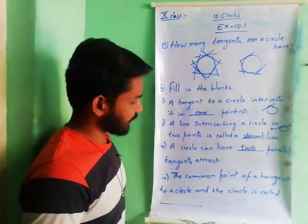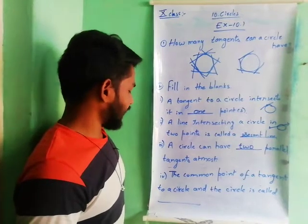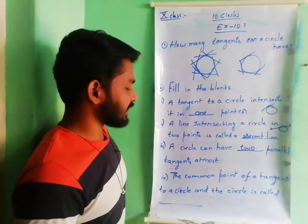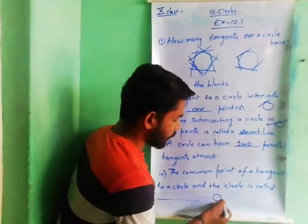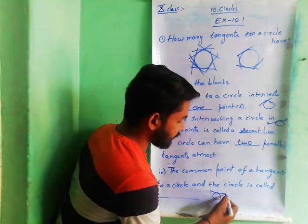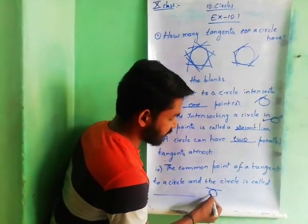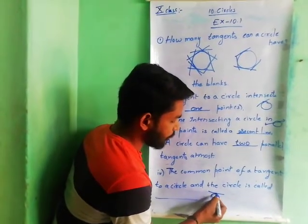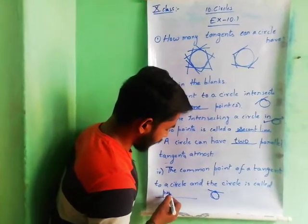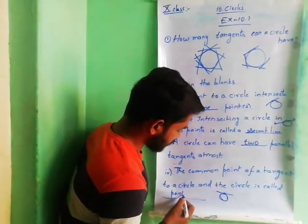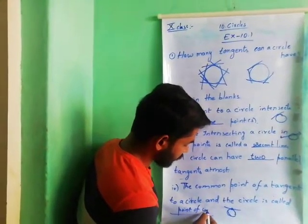Coming to the fourth one: the common point of a tangent to a circle and the circle is called the point of contact.